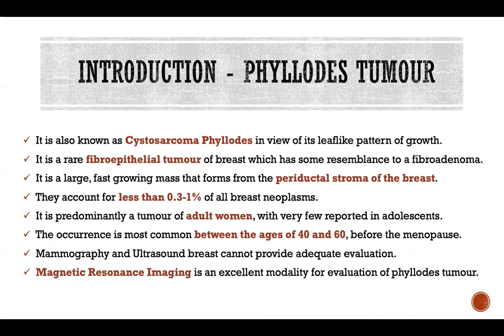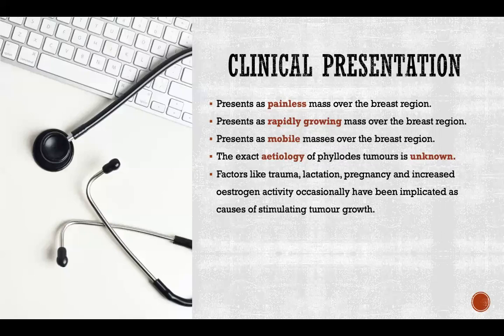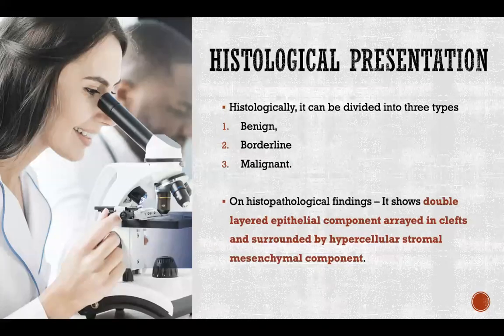Regarding clinical presentation: it presents as a painless, rapidly growing mobile mass over the breast region. The exact etiology is unknown; factors like trauma, lactation, pregnancy, and increased estrogenic activity are occasionally involved in stimulating tumour growth. On histology, it is of three types: benign, borderline, and malignant. On histopathology, the findings include a double-layered epithelial component arrayed in clefts and surrounded by a hypercellular stromal mesenchymal component.